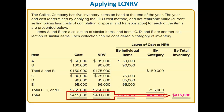Finally, if we apply the lower of cost or net realizable value approach by total inventory, we see that the inventory's total cost is $415,000 and is lower than its total net realizable value of $431,000. The inventory then would be reported at its cost of $415,000.